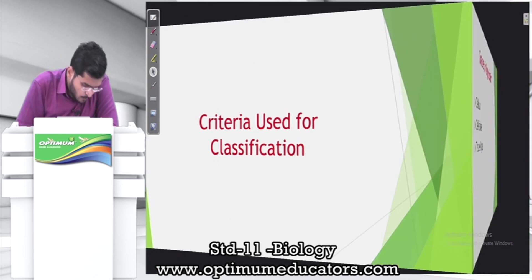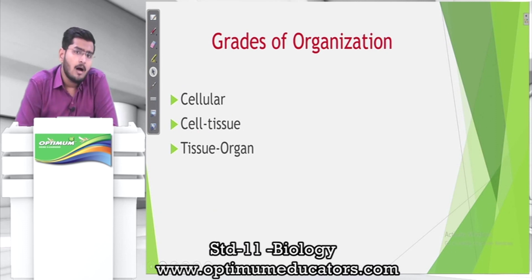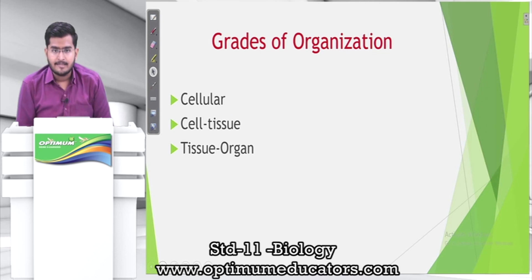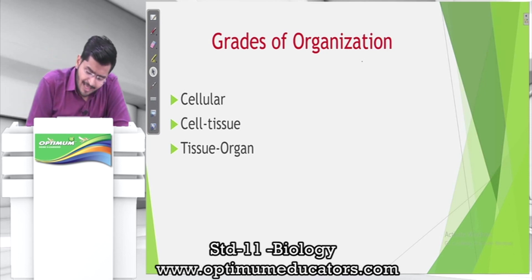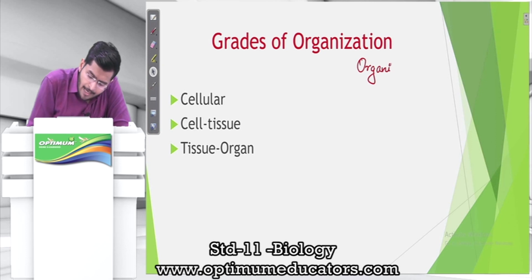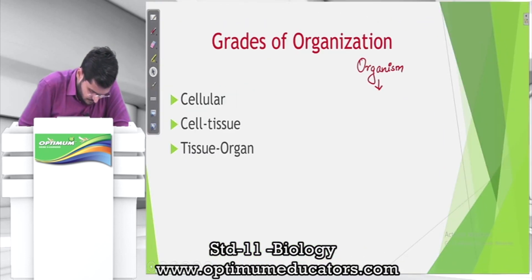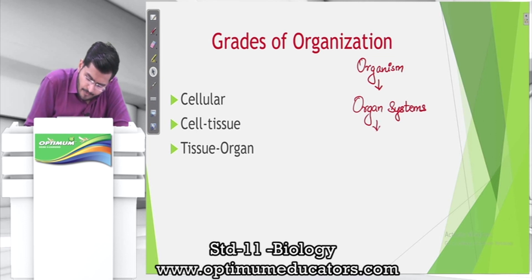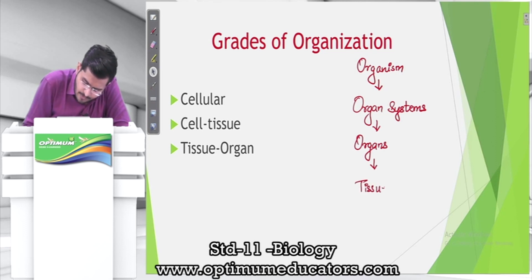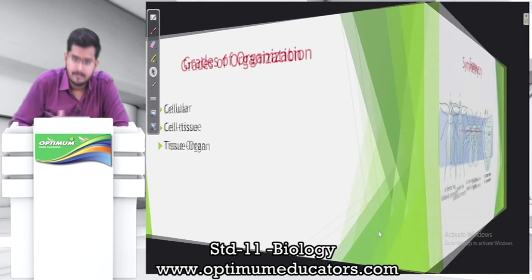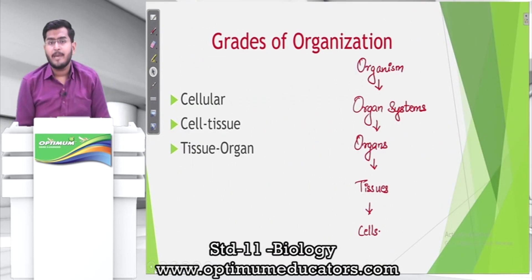The first criteria is grades of organization. Some organisms have just individual cells, so we call it cellular level of organization — they do not have tissues or organs. An organism is made up of organ systems; organ systems are made up of organs; organs are made up of tissues; and tissues are made up of cells.